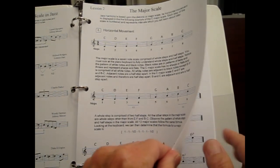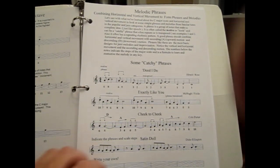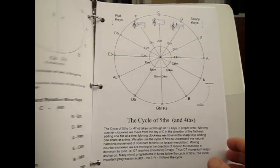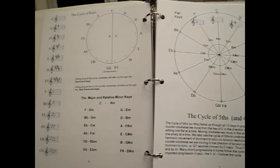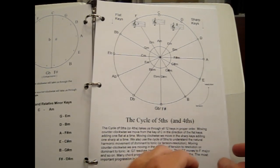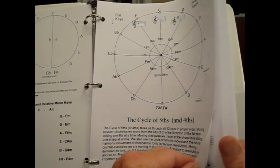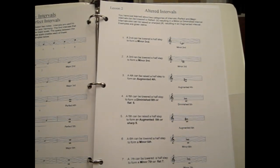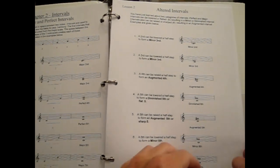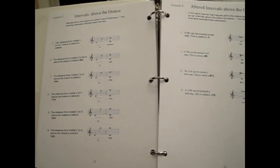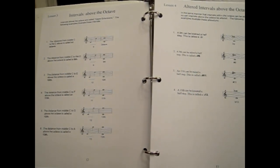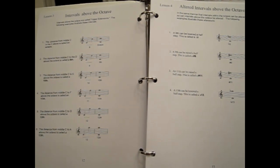You learn the major scale — both its horizontal and vertical movement — and notes above the octave, as well as creating melodic phrases using the scale. Then you get right into the cycle of fifths, one of the most important things you can learn in music theory — how harmony works and how one part moves to another. Then you learn the major and minor scales, and in chapter two, intervals and altered intervals, including intervals above the octave. The book is practical because it's in a three-ring binder and will be easy to use.